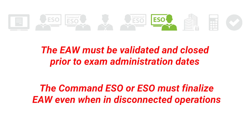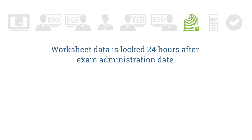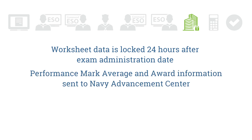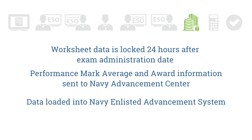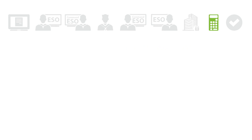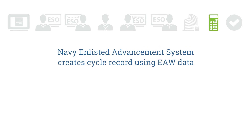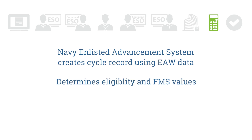The EAW must be validated and closed prior to exam administration dates. The Command ESO or ESO must finalize EAW even when in disconnected operations. Step 7: Worksheet data is locked 24 hours after the exam administration date, and data — to include performance mark average and award information — is sent electronically to the Navy Advancement Center to load into the Navy Enlisted Advancement System. Step 8: The Navy Enlisted Advancement System creates a cycle record using EAW data to determine eligibility and calculate final multiple score values for advancement determination.